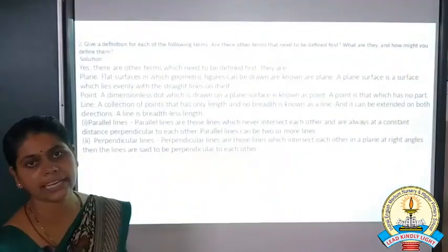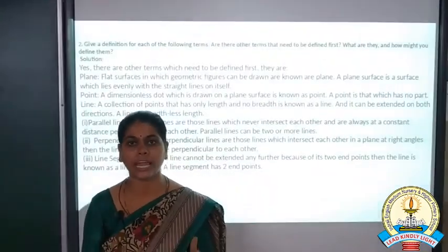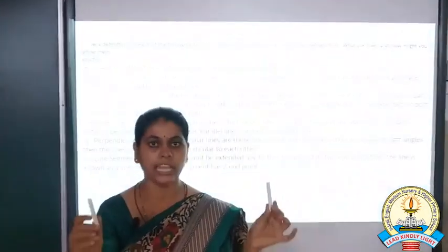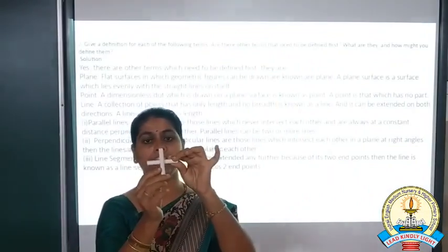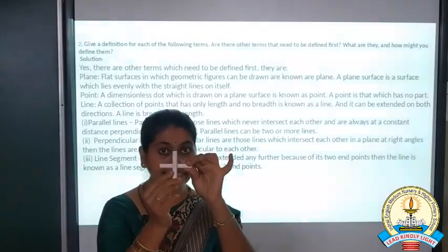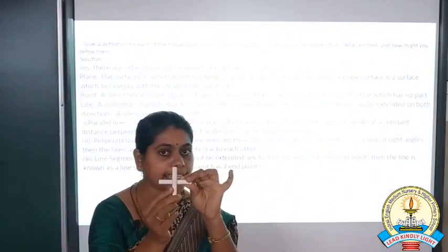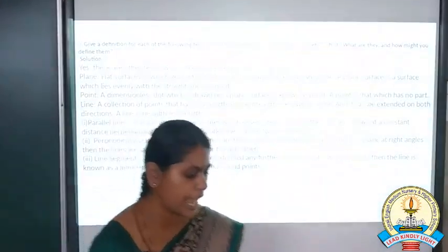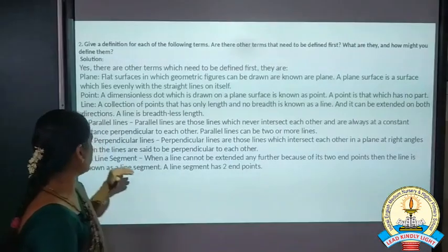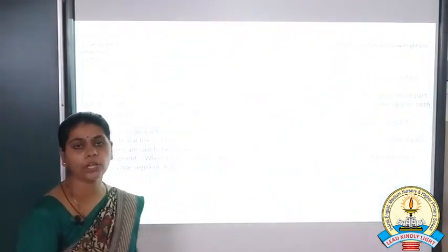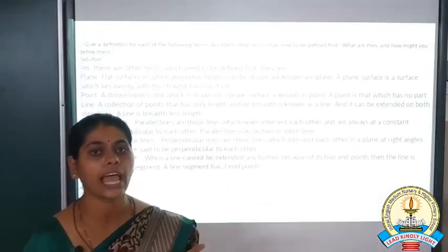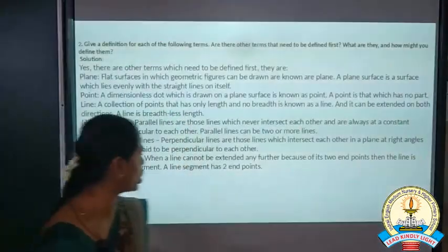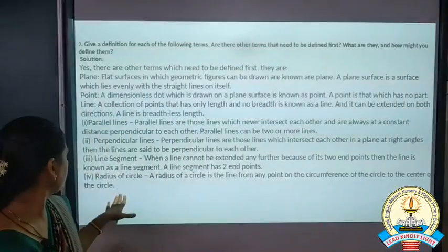Next is perpendicular lines. Perpendicular lines means two lines that intersect each other. For example, if I take this chalk piece, these are two lines. If they intersect at a right angle — 90 degrees — then such lines are called perpendicular lines. So two lines that intersect at right angles are called perpendicular lines. Next is a line segment: it is a line which has a starting point and an end point — it has two end points.